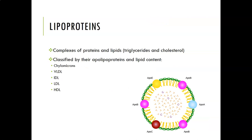Lipoproteins will get their own video, but briefly: they are complexes of protein and lipids — mainly triglycerides and cholesterol in the blood — classified by their apolipoproteins (such as ApoE, ApoB, ApoA) and their lipid content. In order from largest to smallest, or least dense to most dense: chylomicrons, VLDL (very low density lipoprotein), IDL (intermediate density lipoprotein), LDL (low density lipoprotein), and HDL (high density lipoprotein).